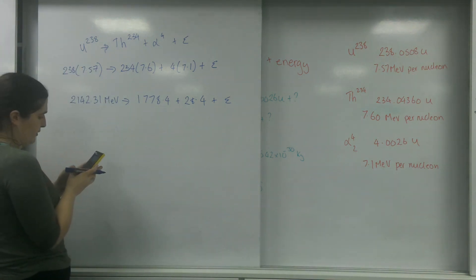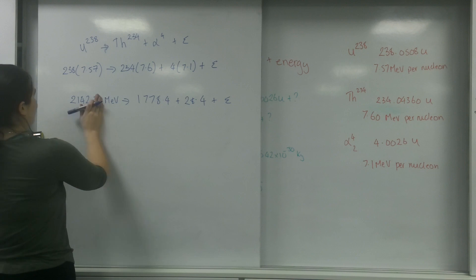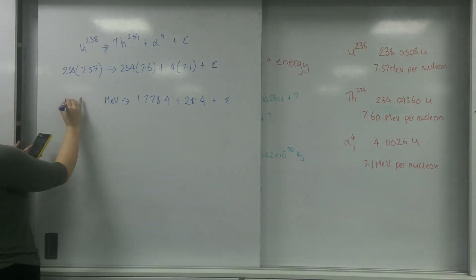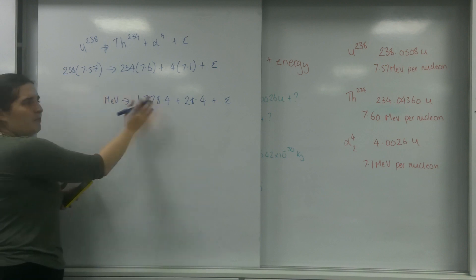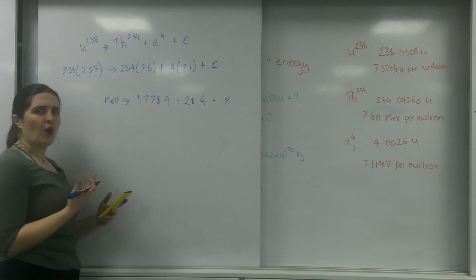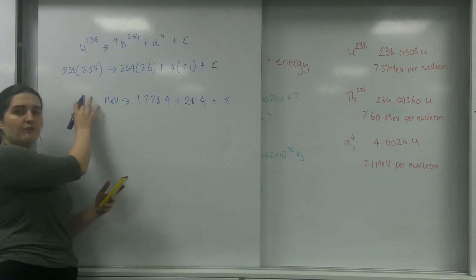Just double checking that one. 238 times 7.57... oh, that's wrong there. I'm wondering why it looked a bit strange. The reason I knew it looked strange was because this number was bigger - my products were smaller than my reactant, and that shouldn't work. This number on this side, if you're using binding energy, should be smaller than this side. So it was just me putting numbers into the calculator wrong.